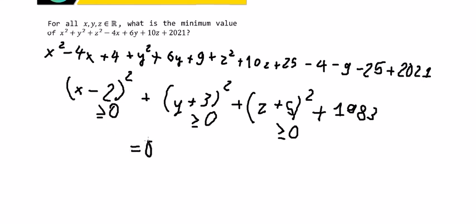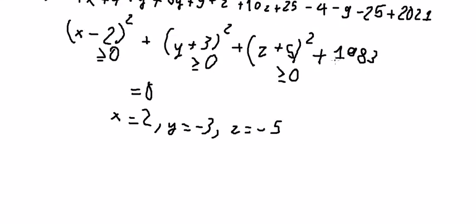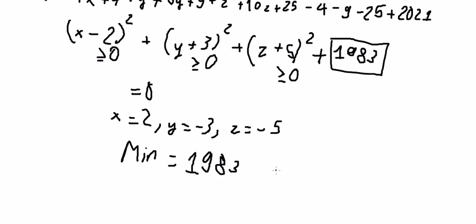So x equals 2, y equals negative 3, and z equals negative 5. The minimum value we need to find is this one. That's it, the end. Thank you for watching.